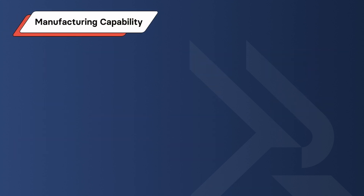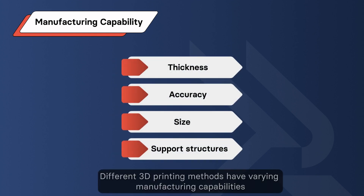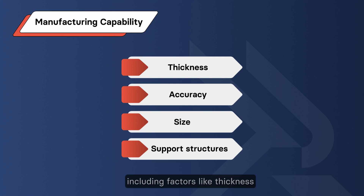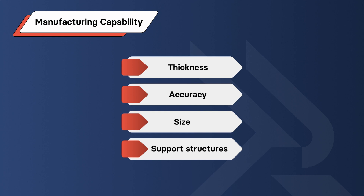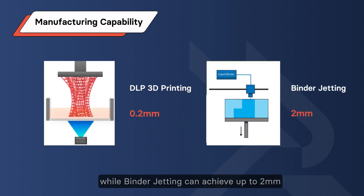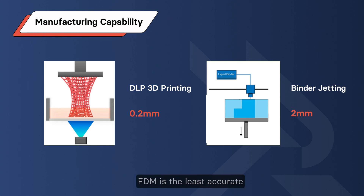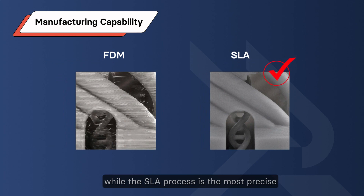Consideration 3: Manufacturing Capability. Different 3D printing methods have varying manufacturing capabilities, including factors like layer thickness, accuracy, size, and support structures — all are vital considerations. For instance, DLP offers a layer thickness of 0.2 mm, while binder jetting can achieve up to 2 mm. As for dimensional accuracy, FDM is the least accurate, while SLA is the most precise.